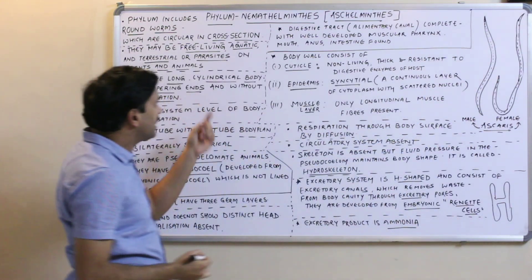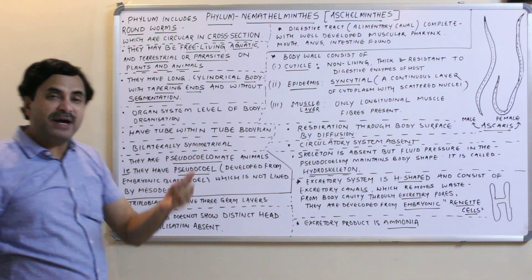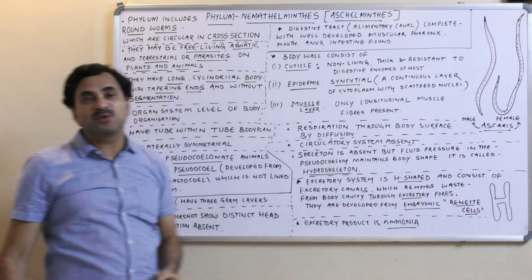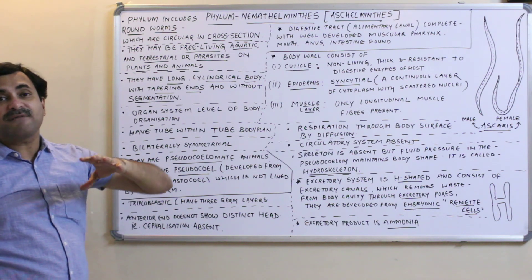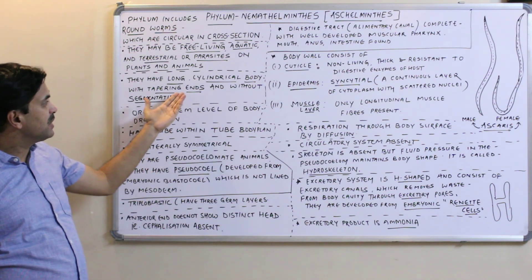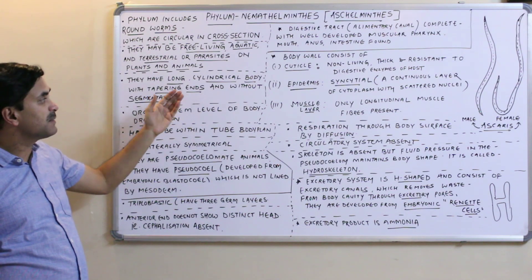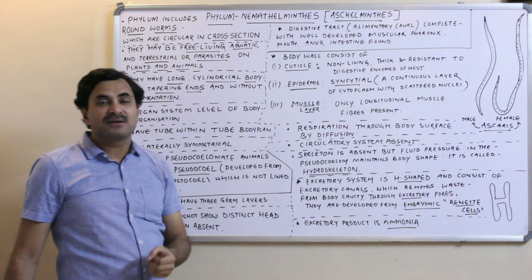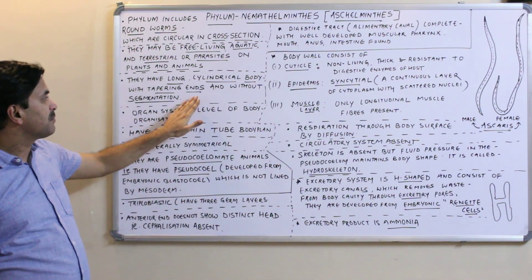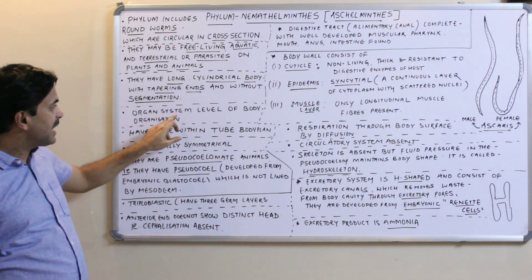Their body is without segmentation. In the next phylum, Annelida, which includes earthworms, there is true metameric segmentation, but nematodes lack true segmentation. Some say they have pseudo-segmentation, but actual segmentation is absent.